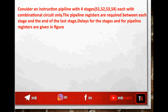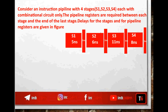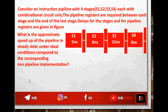Consider an instruction pipeline with four stages, each with combinational circuit only. Pipeline registers are required between each stage and at the end of the last stage. The delays for the stages and pipeline registers are given in the figure. What is the approximate speedup of the pipeline in steady state under ideal conditions compared to the corresponding non-pipeline implementation?